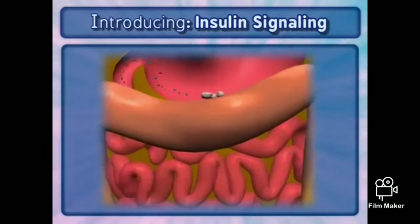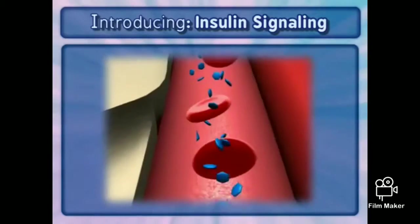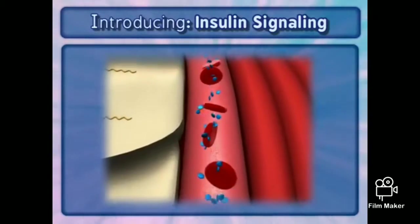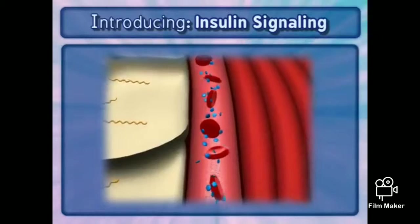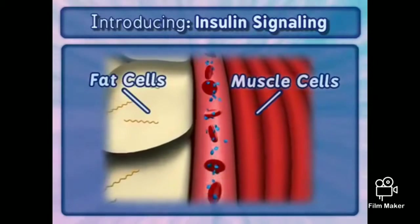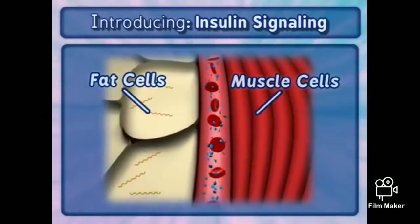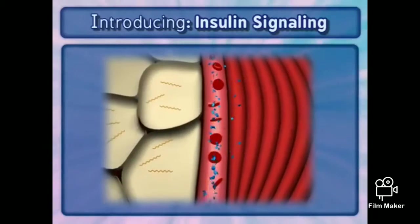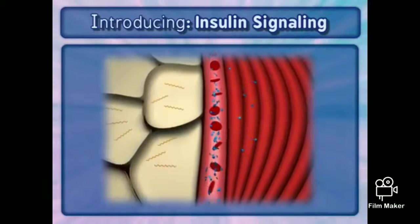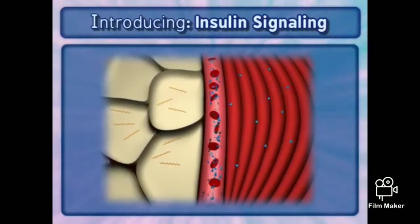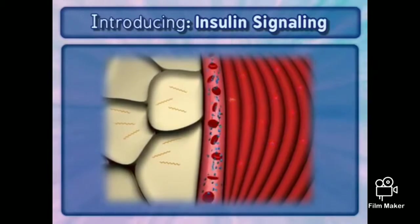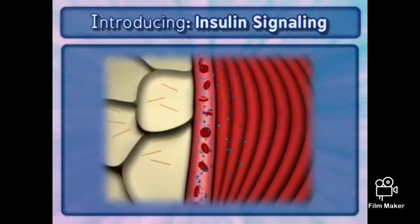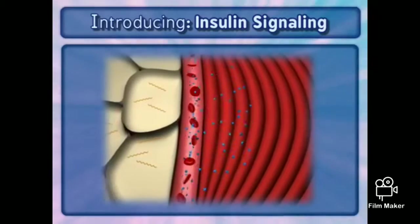Following the digestion of food, higher levels of glucose circulate through the bloodstream, where it enters different cell types. In muscle cells, glucose is readily used to produce energy and is also stored as glycogen, a secondary short-term energy source.